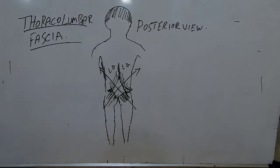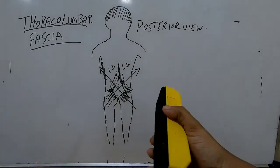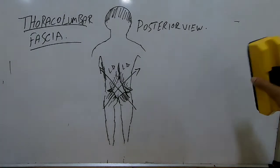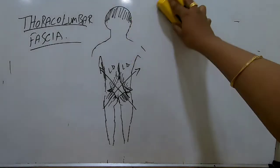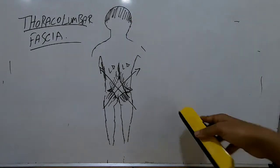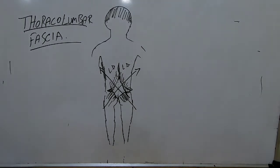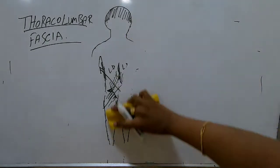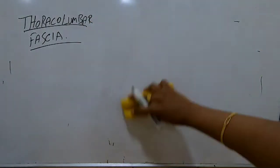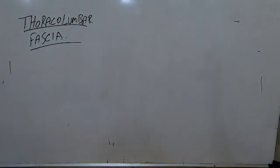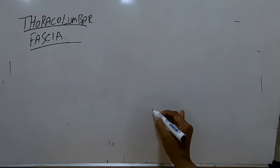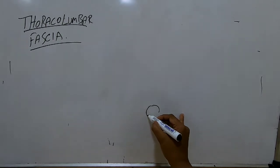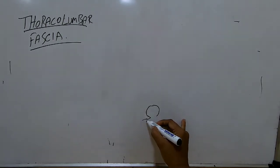The thoracolumbar fascia has three layers. We will now see the superior view of the thoracolumbar fascia - imagine any vertebra at any level, looking from above. This is the anterior side and this is the posterior side.